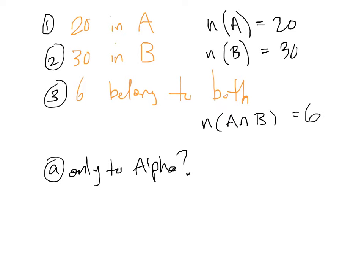So we would take the number of Alpha, and we would subtract the number in Alpha intersect Beta, and that would be 20 minus 6, which is 14.